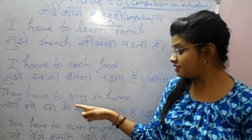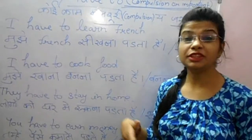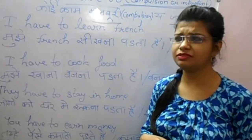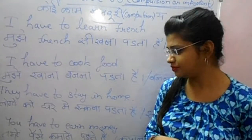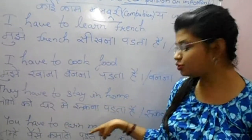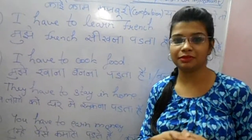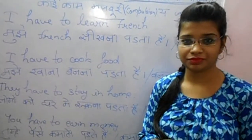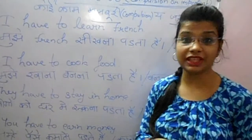Third sentence is: They have to stay in home. Yani un lukon ko ghar mein hi rukna padhta hai. Ya pher hum kahenge ki un lukon ko ghar mein rukna zaruri hai. Last but not the least: You have to earn money. Yani tumhe paise kamaana padhta hai. Ya tumhe paise kamaana zaruri hai. So in this way we have completed our topic have to.